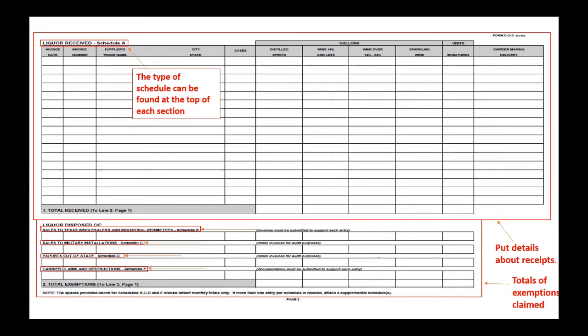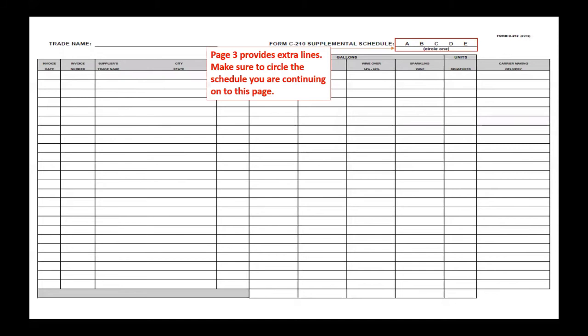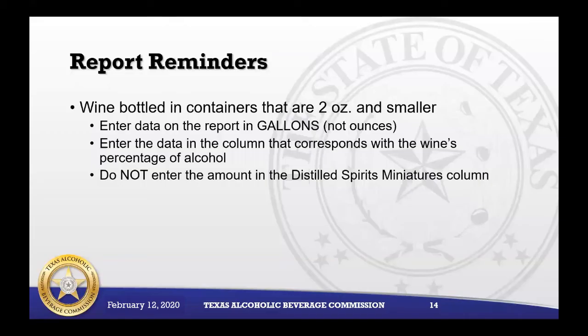Liquor receipts are entered onto Schedule A. The type of schedule can be found at the top of each section. You want to put the details about the receipts, and the totals of exemptions claimed go at the bottom under Section Two Total Exemptions. Page three provides extra lines — make sure you circle the schedule you are continuing at the top right of that page.